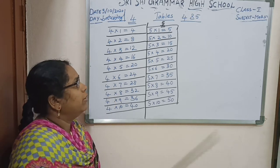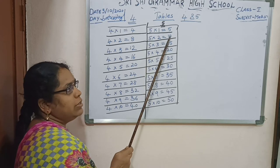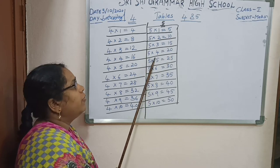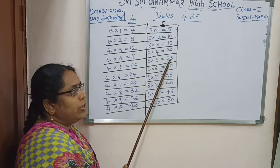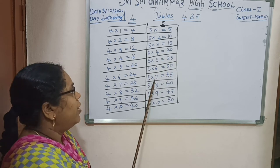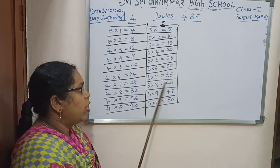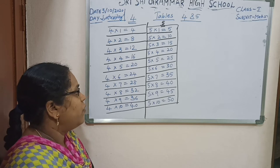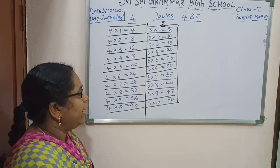Next, 5 tables. 5 ones are 5. 5 twos are 10. 5 threes are 15. 5 fours are 20. 5 fives are 25. 5 sixes are 30. 5 sevens are 35. 5 eights are 40. 5 nines are 45. 5 tens are 50.